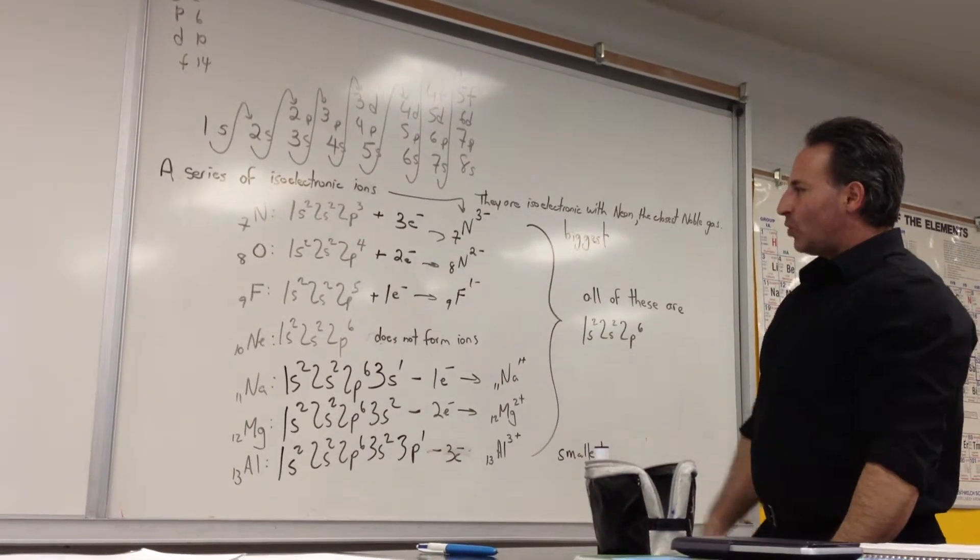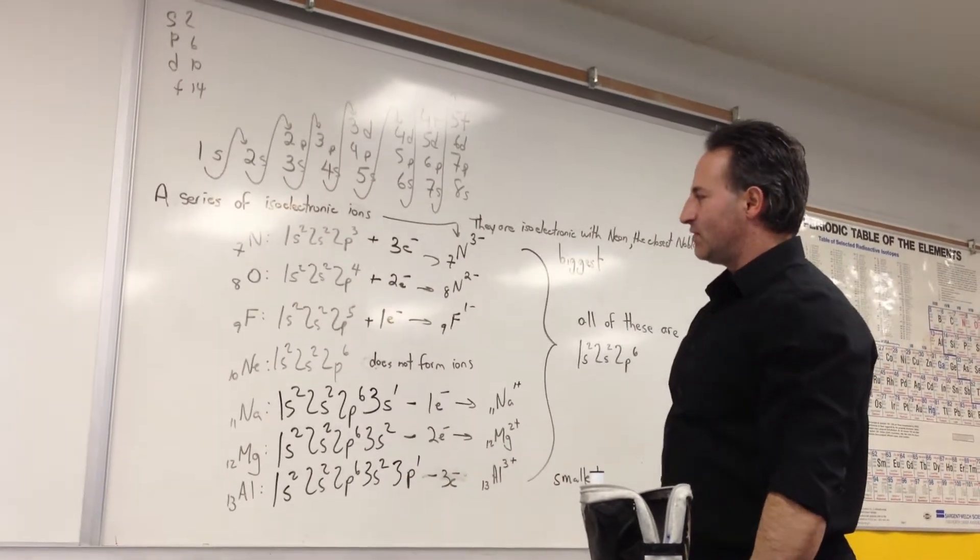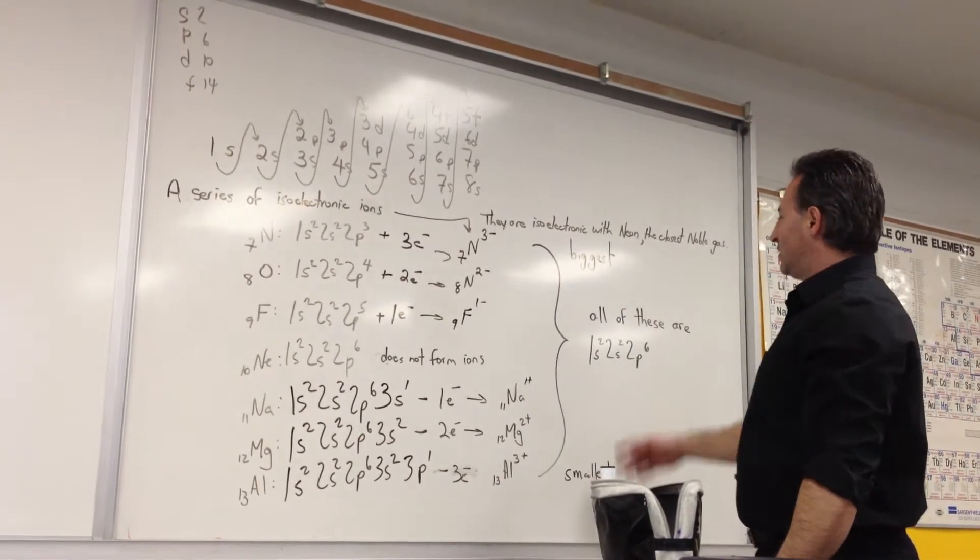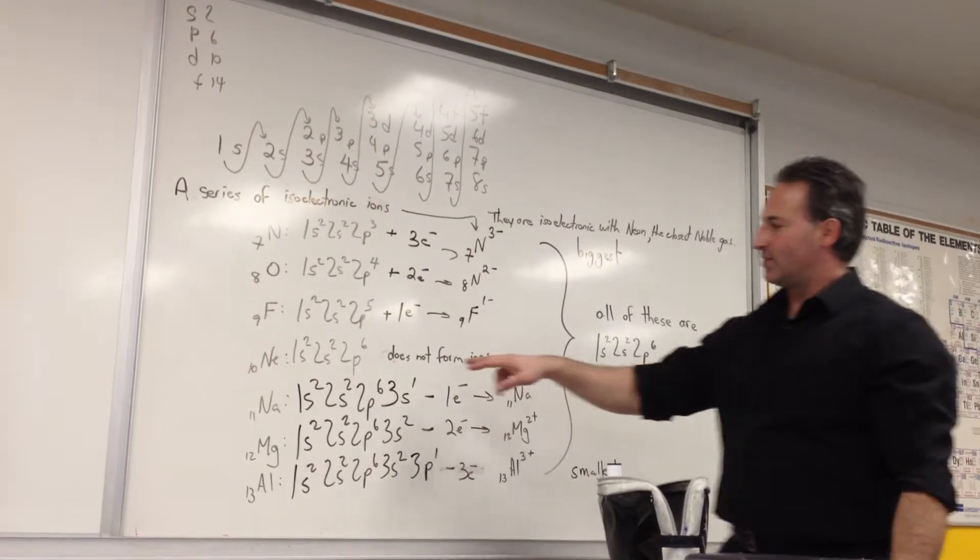But watch what happens to their electron configuration as they achieve these ionic configurations. They all become 1s² 2s² 2p⁶, which imitates the configuration of neon.